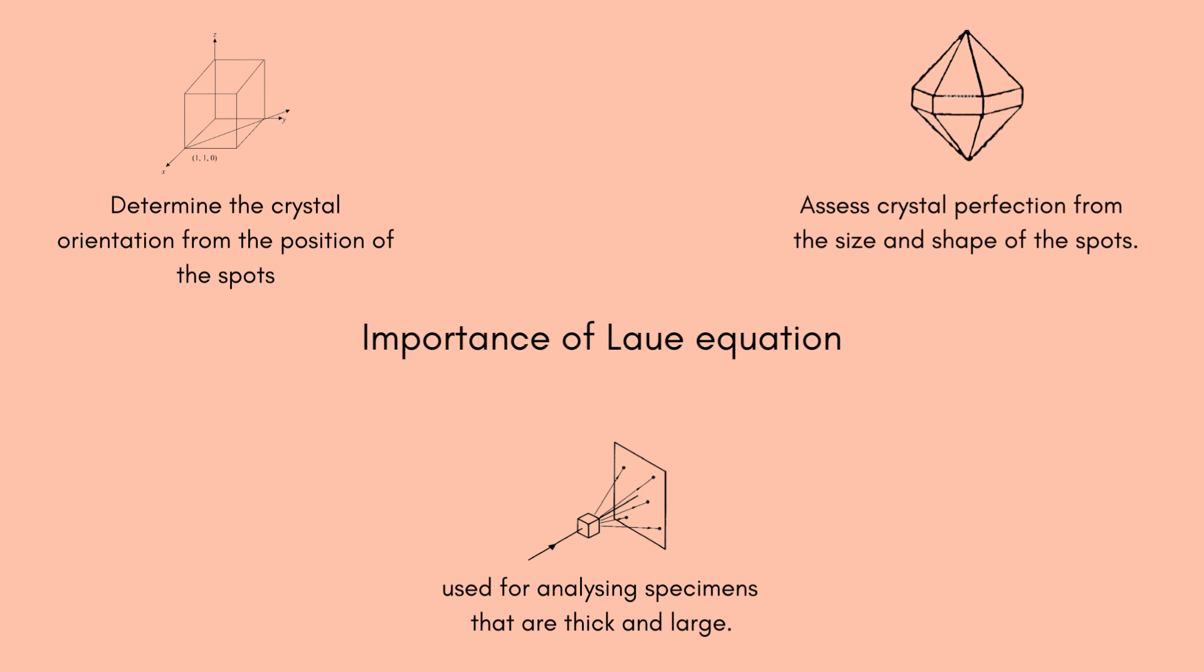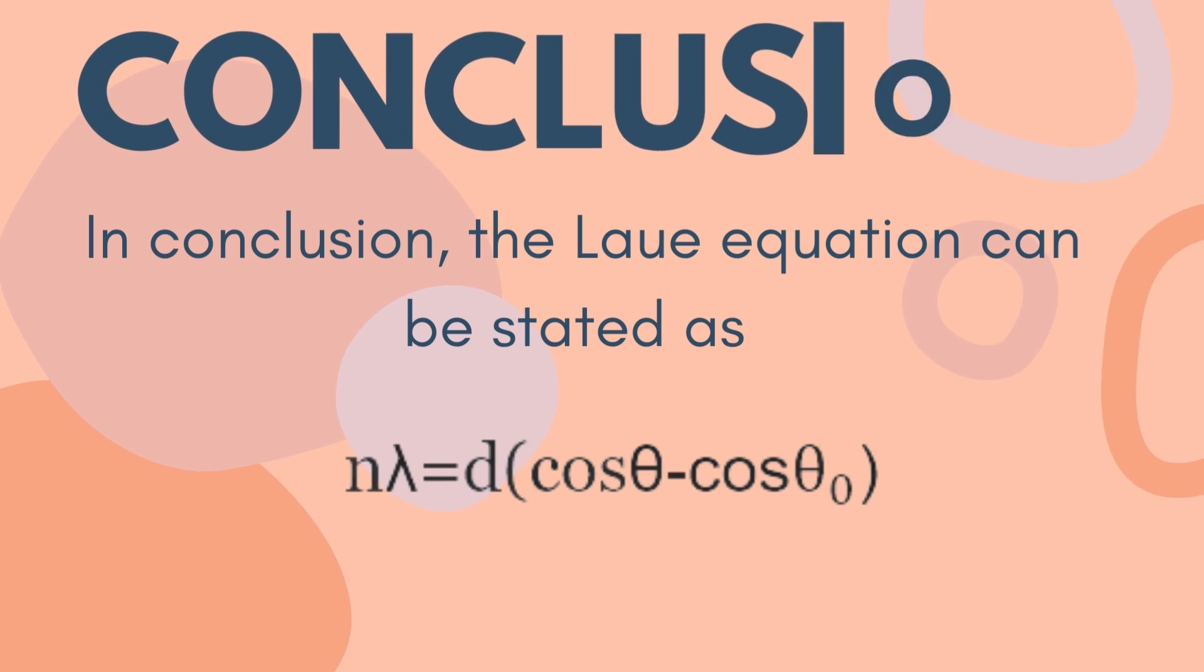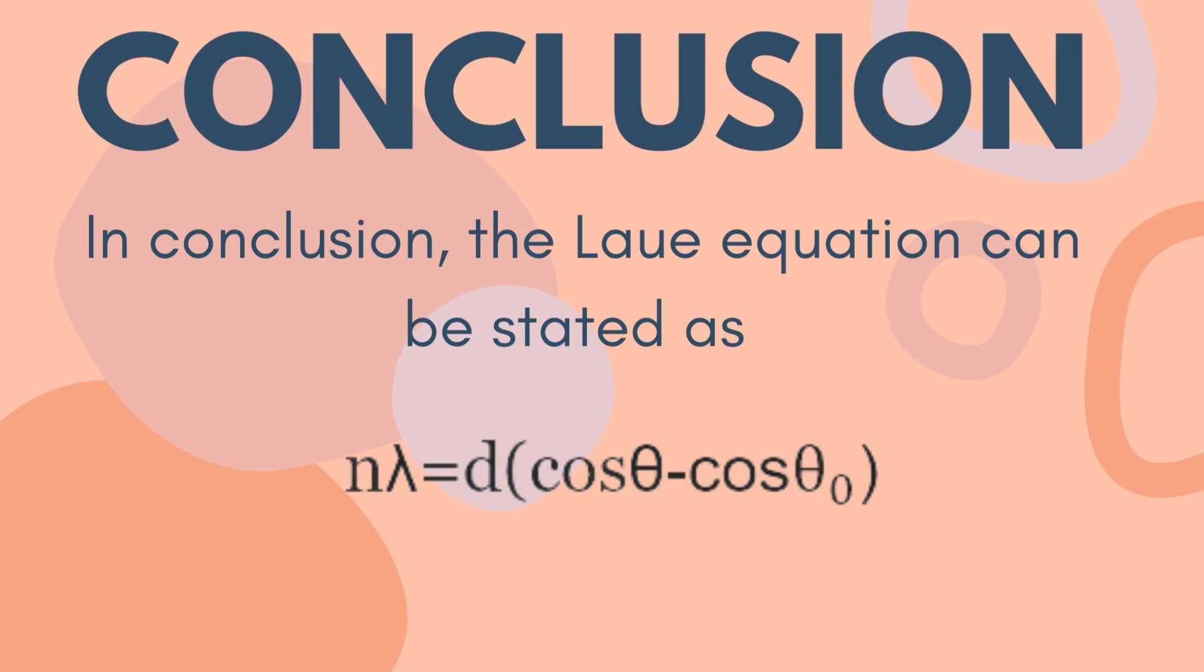Thirdly, it can also be used to indicate a point of the reciprocal lattice of the crystal under measurement. In conclusion, the Laue equation can be stated as n lambda equals d cos theta minus d cos theta naught.